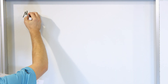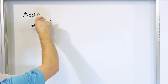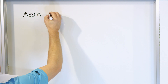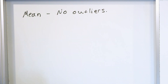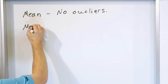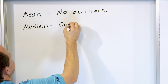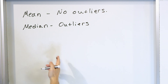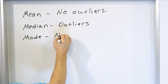So let me just write these down. In general, we want to use the mean — also called the average value of a data set — when we don't really have any outliers. The median is what we use generally when we know that we have some outliers. If we do have outliers, we tend to use the median. And the mode, we generally use when you have non-numerical data.